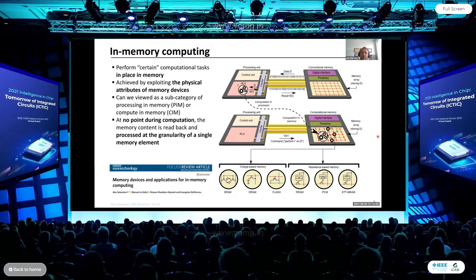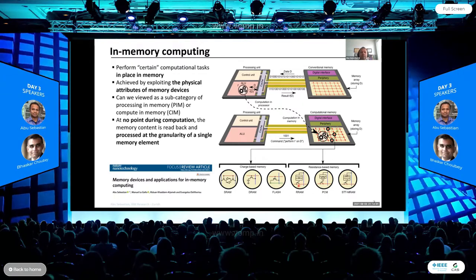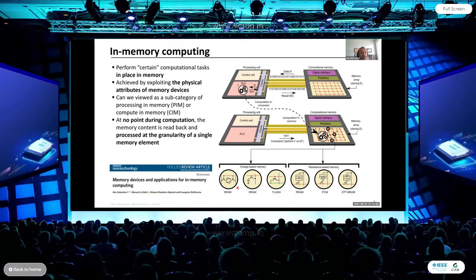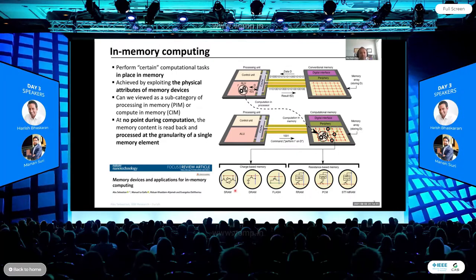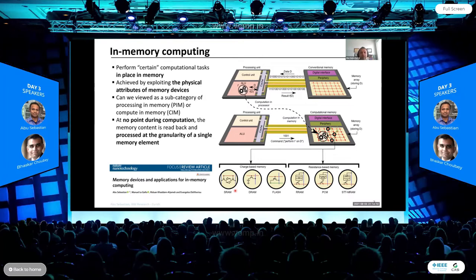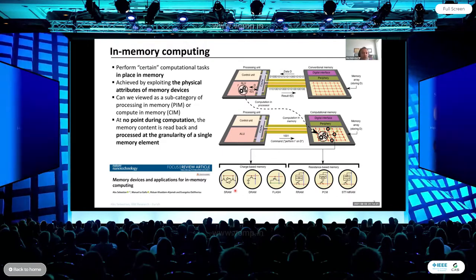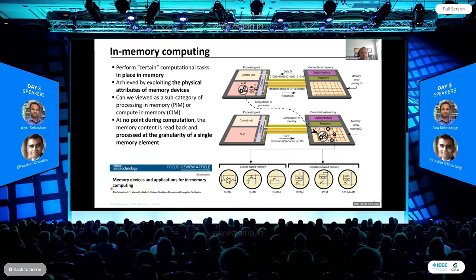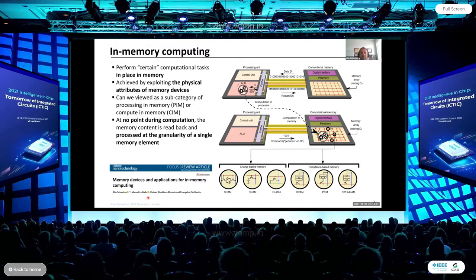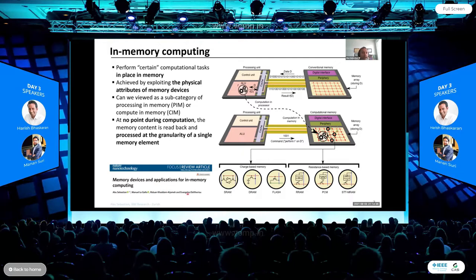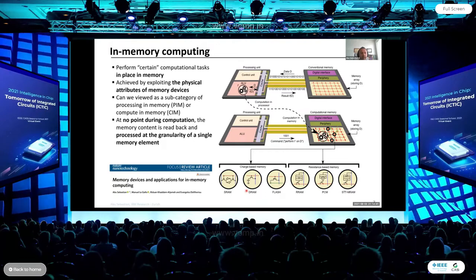In recent years, in-memory computing has been facilitated with both charge-based memory devices like SRAM and DRAM, as well as resistance-based memory devices, exploiting different physical attributes — charge sharing and Coulomb's law for charge-based, and Ohm's law for resistive devices. There was a nice review article we wrote summarizing the whole field, covering the device side and broader applications of in-memory computing. Today I will focus mostly on the deep learning application.